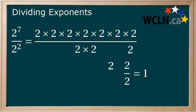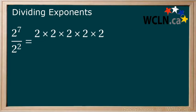We know that 2 over 2 equals 1. Because 1 multiplied by a number is still that number, we can remove each 2 over 2 that we have. Now you can see that this leaves us with 2 to the power of 5.